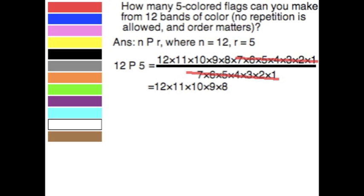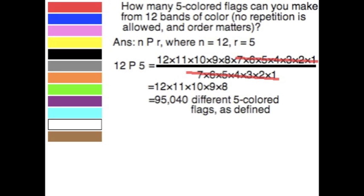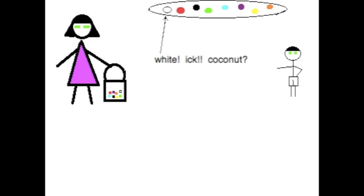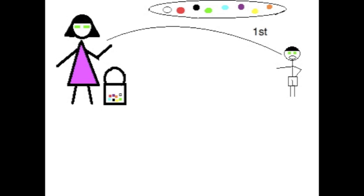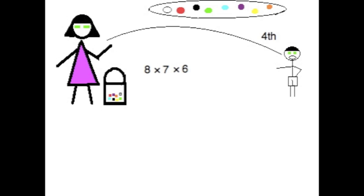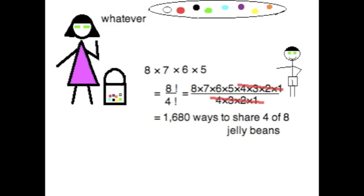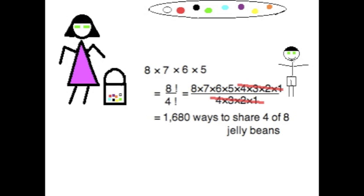You'll have some cancellation. Take eight different flavored jelly beans, give your brother four — how many ways to share four jelly beans in all the different orders? Eight factorial over four factorial: that's 1,680 ways to share. 8P4, because order matters, so many ways to show you care.